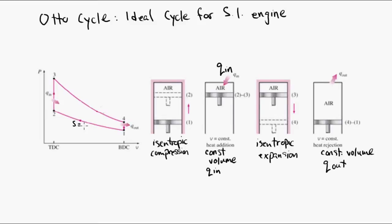So here from one to two is the isentropic compression. From two to three is the heat input, representing combustion at constant volume. Three to four is isentropic expansion.